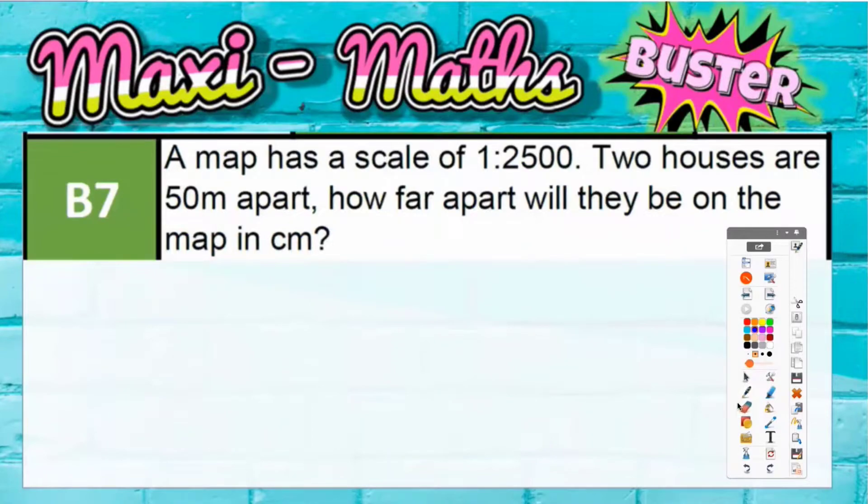Question B7: A map has a scale of 1 to 2500. Two houses are 50 meters apart, how far will they be on the map in centimeters? Remember, any map scale starts with the number to do with the map on the left.